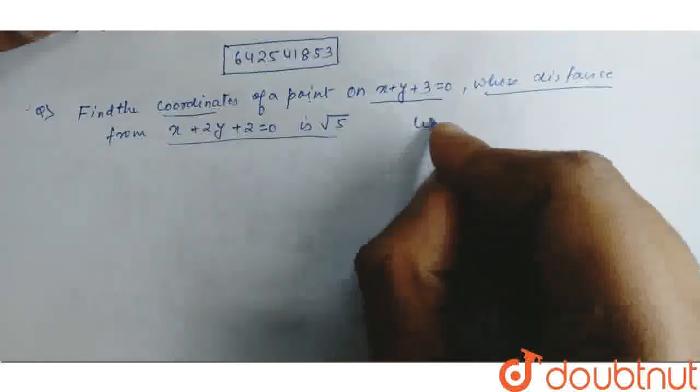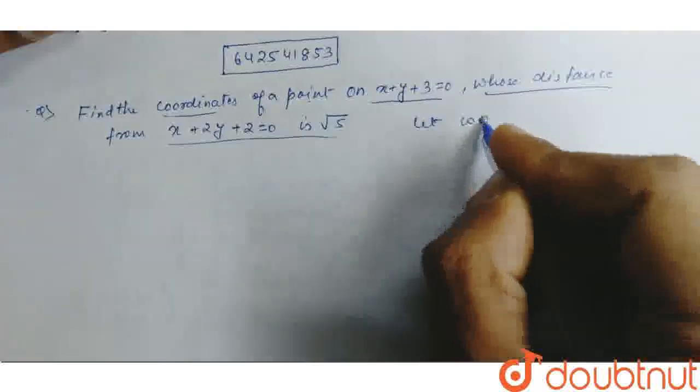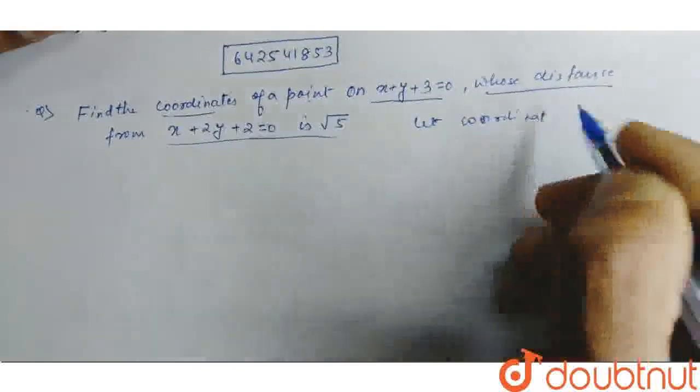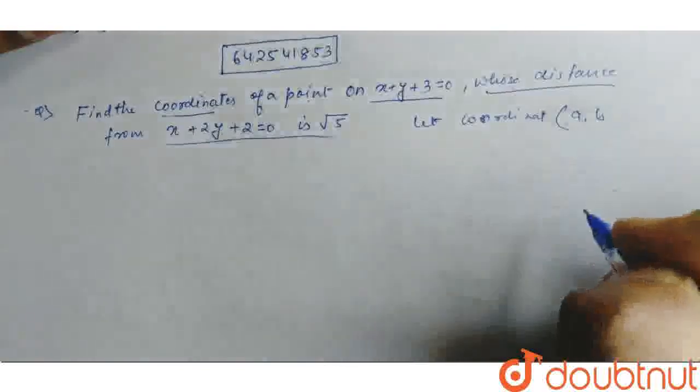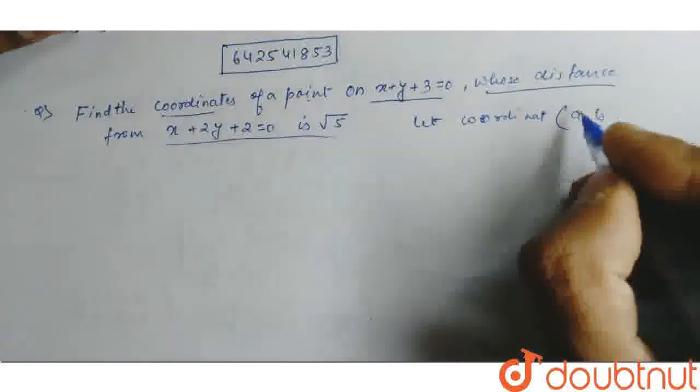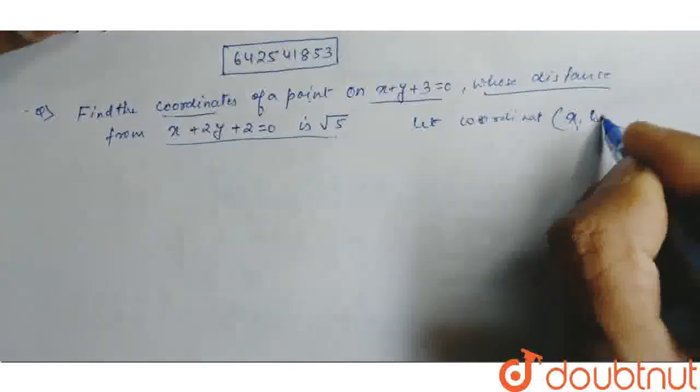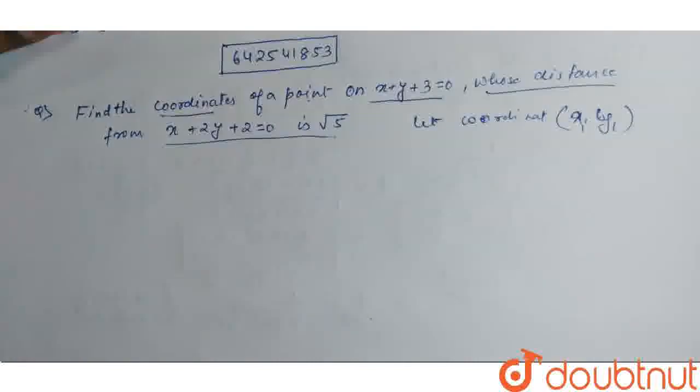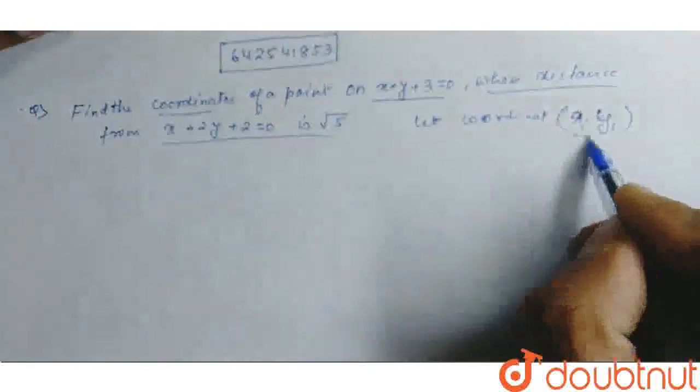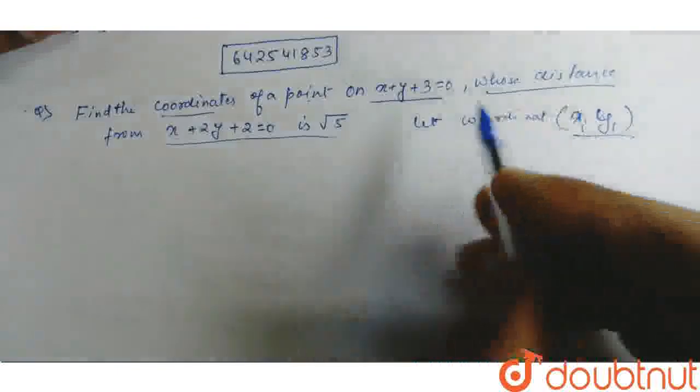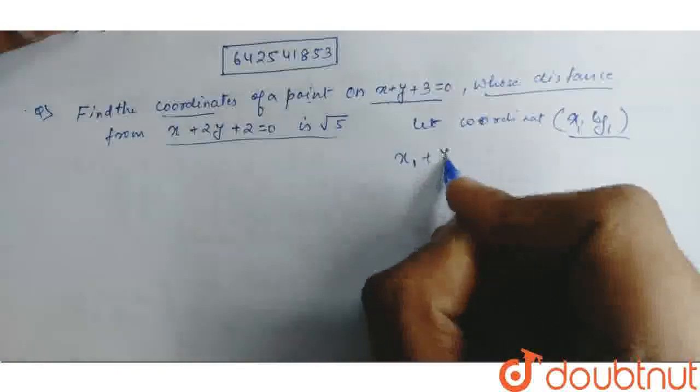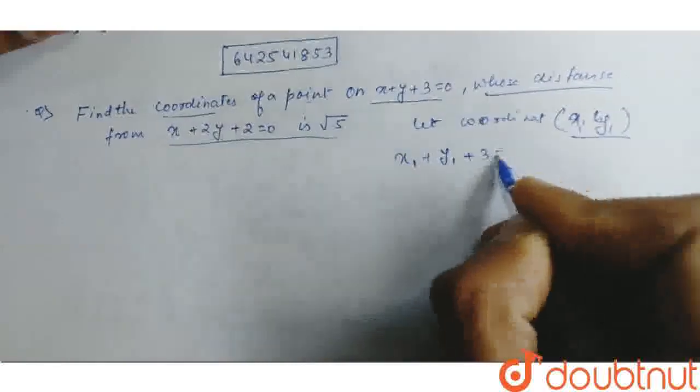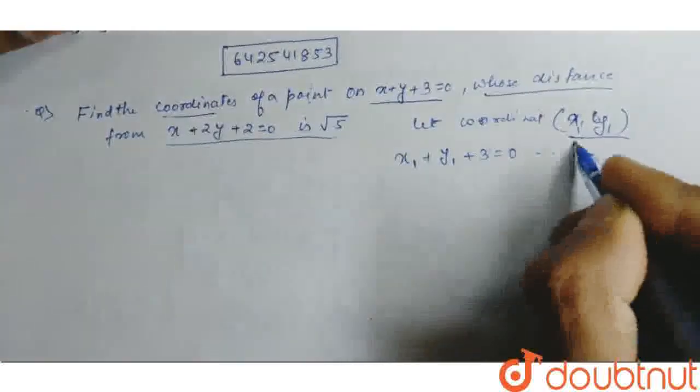Now, let coordinates be x1 and y1. So, these coordinates will be on this line. And so, the equation of this line is x1 plus y1 plus 3 equal to 0, let's say equation 1.